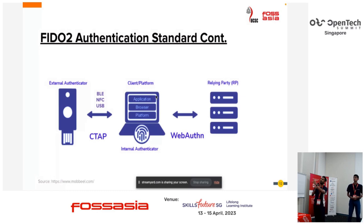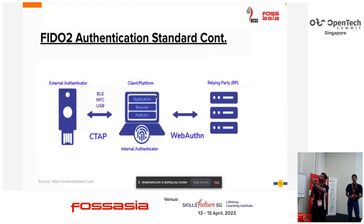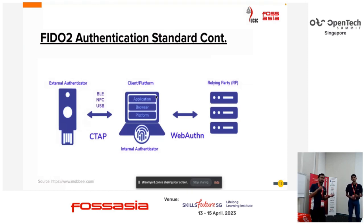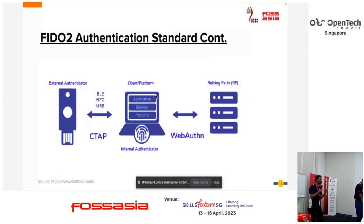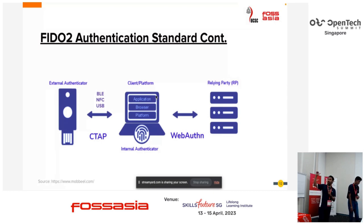Communication between the client platform and authenticator happens via USB, NFC, or Bluetooth. The WebAuthn protocol is used to communicate between the client platform and the relying party — which is basically an authentication server in the cloud or your network — to complete the authentication request.